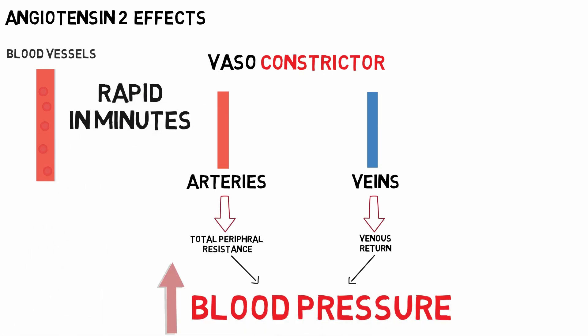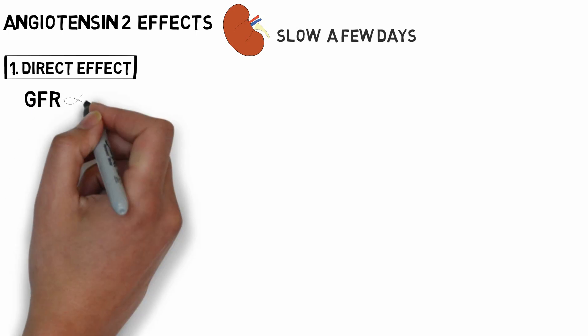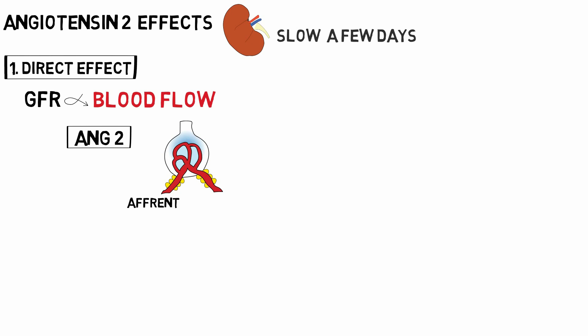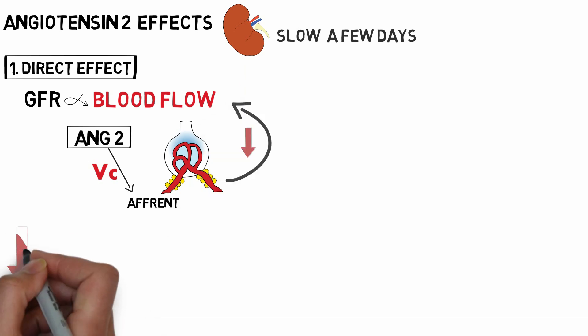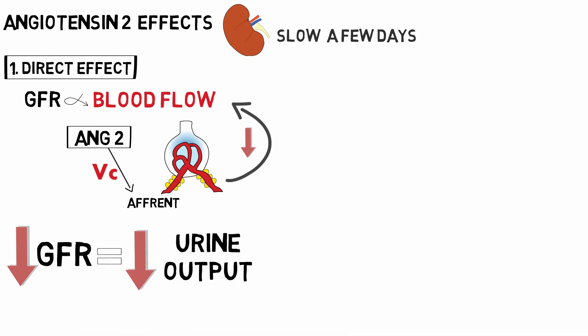This effect is rapid and takes a few minutes. Now let's look at the effects of angiotensin 2 on the kidneys. These effects are slow and take a few days to have their maximum effect. Angiotensin 2 acts on the kidney in two ways. The first is the direct mechanism — the GFR of the kidney is directly proportional to blood flow through the kidneys. Angiotensin 2, being a powerful vasoconstrictor, constricts the afferent arterioles mainly, decreasing blood flow through the kidneys, which results in a decrease in GFR and a decrease in urine output.